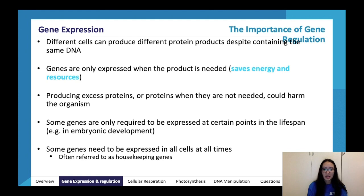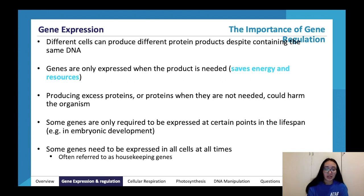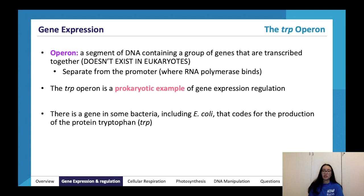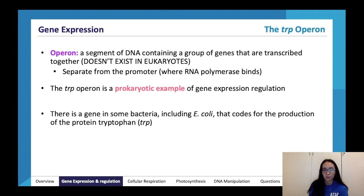Some genes need to be expressed in all cells at all times — these are often called housekeeping genes — but many others don't need to be expressed constantly. An operon is a segment of DNA containing a group of genes that are transcribed together. Importantly, operons only exist in prokaryotes, not eukaryotes. An operon consists of a promoter where RNA polymerase binds, a series of structural genes transcribed together, and an operator region. One method of gene expression regulation is the trp operon, which is explicitly defined in your study design.